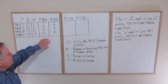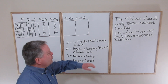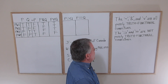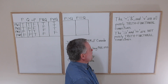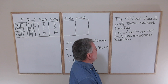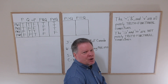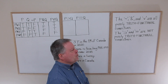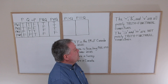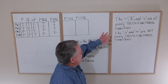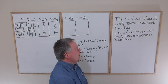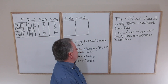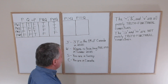All of that is straightforward and highly intuitive. As a result, there's no controversy regarding the claim that the tilde, the ampersand, and the vel are all purely truth-functional connectives — meaning you can always tell the truth or falsity of a negation, conjunction, or disjunction as long as you know the truth or falsity of its constituent parts. What we're going to see now is that the horseshoe and the triple bar — the conditional and the biconditional — are not purely truth-functional connectives.